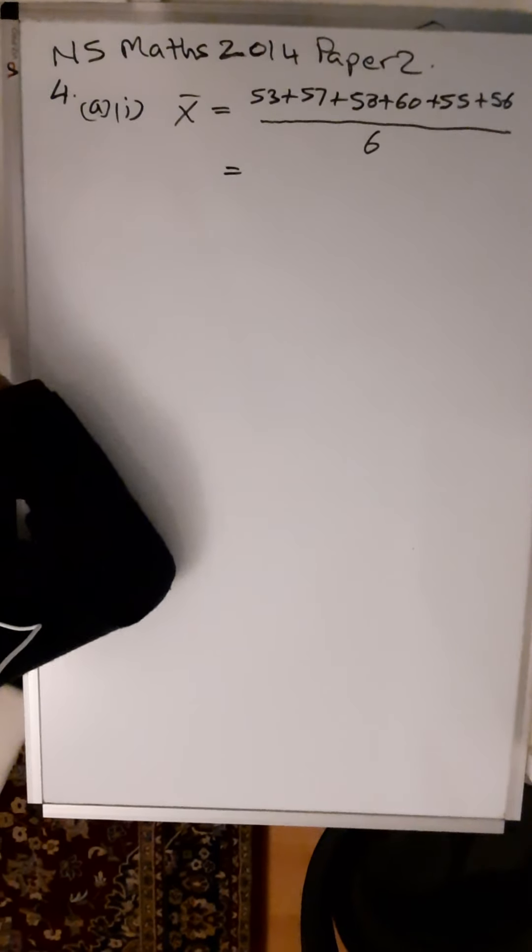Part A-i: Calculate the mean of these lap times. Show clearly all your working. To work out the mean, denoted by the letter x with a bar on top (x̄), you add up all the results.